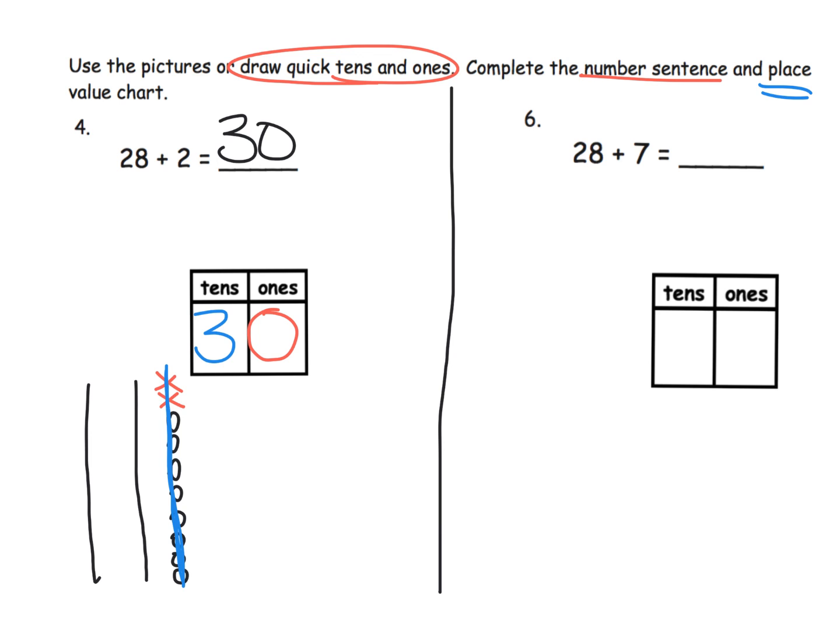Let's do this again. Now we're going to model 28 plus 7. So the first thing we're going to do is we're going to model two tens, and now we're going to model our eight ones: one, two, three, four, five, six, seven, eight.